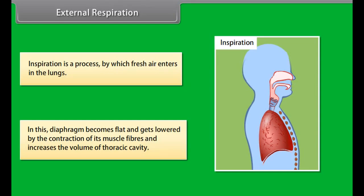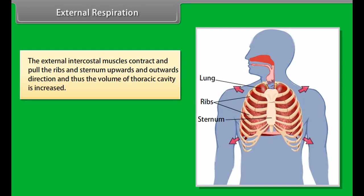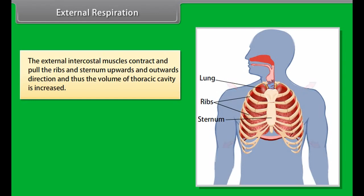External respiration is the process by which gases are exchanged between the blood and the air. It is a physical process — simply the intake of oxygen and giving out of carbon dioxide. It involves two phases: inspiration and expiration.